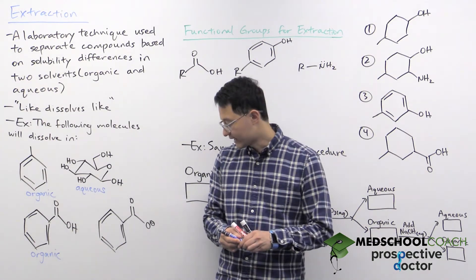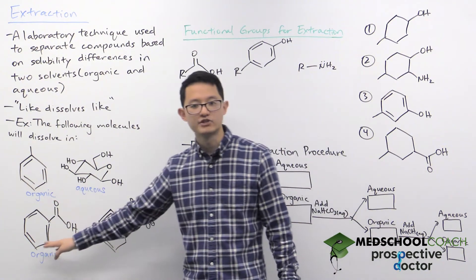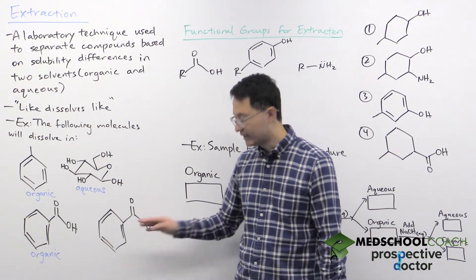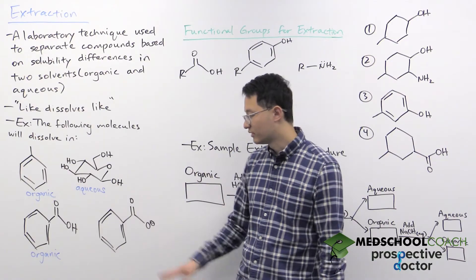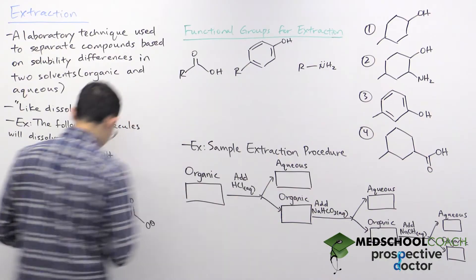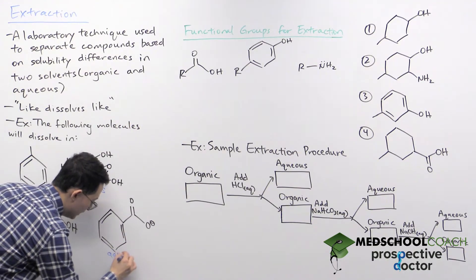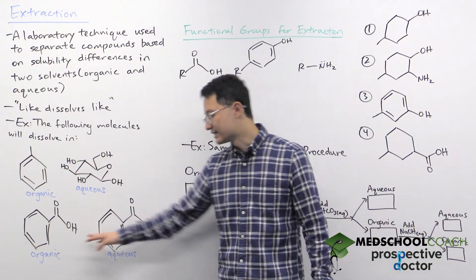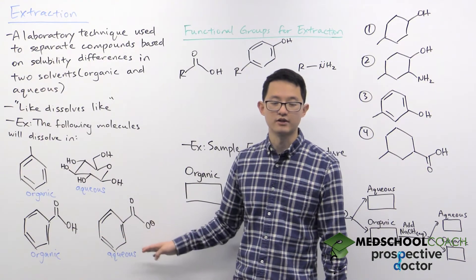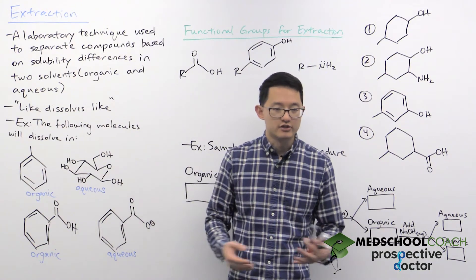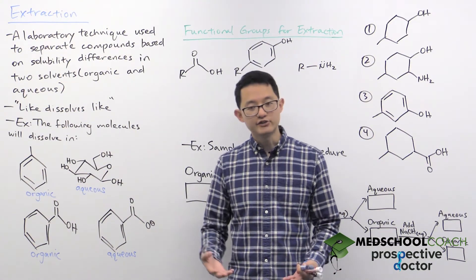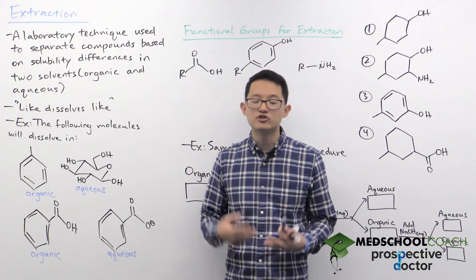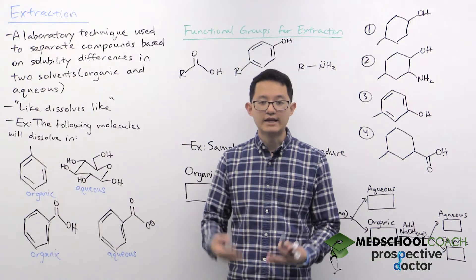Our last example is very similar — it's benzoic acid deprotonated into benzoate. Benzoate has fairly high solubility in the aqueous solvent and low solubility in the organic solvent. The reason for this big difference is the introduction of a full charge in the molecule. Even if your molecule looks largely nonpolar, introducing a full negative or positive charge will substantially increase its solubility in the aqueous solvent.